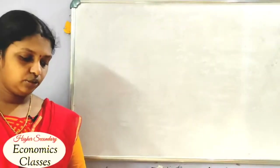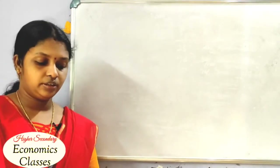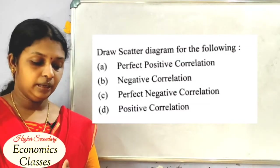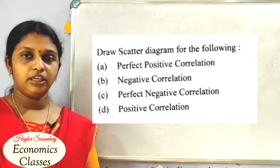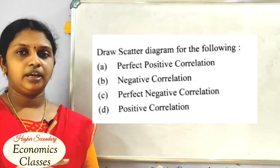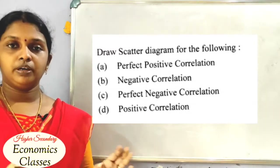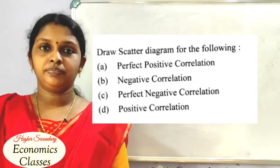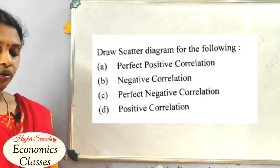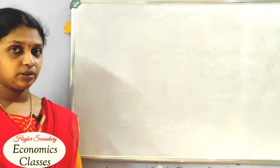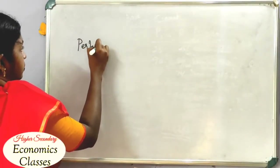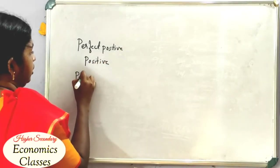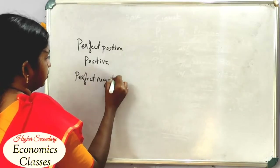Let's go to the next question: draw a scatter diagram for the following data. In the correlation chapter, we learn four types of correlations: Perfect Positive, Positive, Perfect Negative, and Negative correlation.